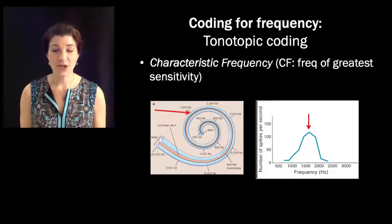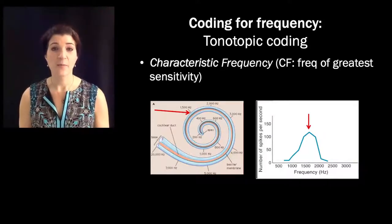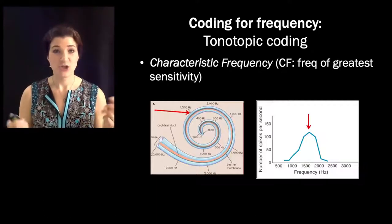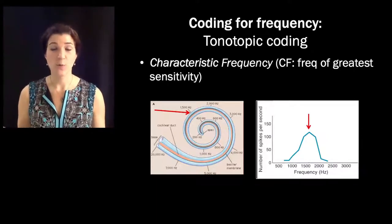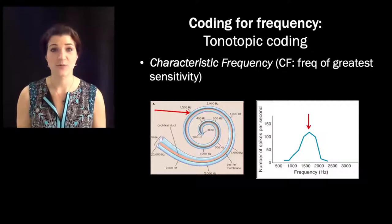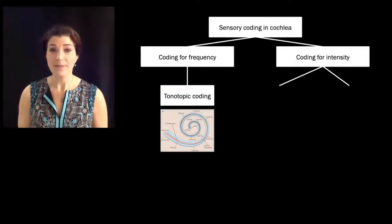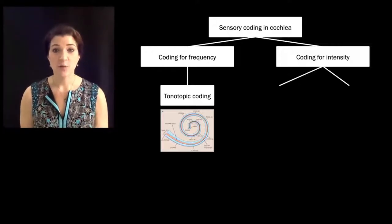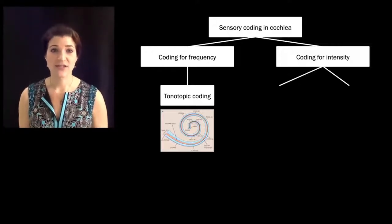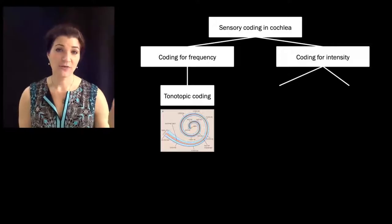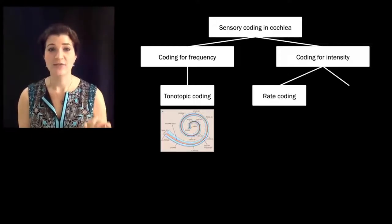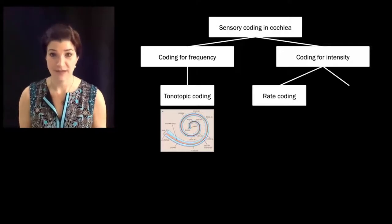This tonotopic coding is one of the primary ways that we code for which frequencies of sound are present — simply by looking at which of the hair cells along the length of the basilar membrane are firing. So how do we code for intensity? One way is via the rate at which auditory hair cells are firing. Tonotopic coding for frequency is which hair cells are firing; rate coding for intensity is how much they are firing.